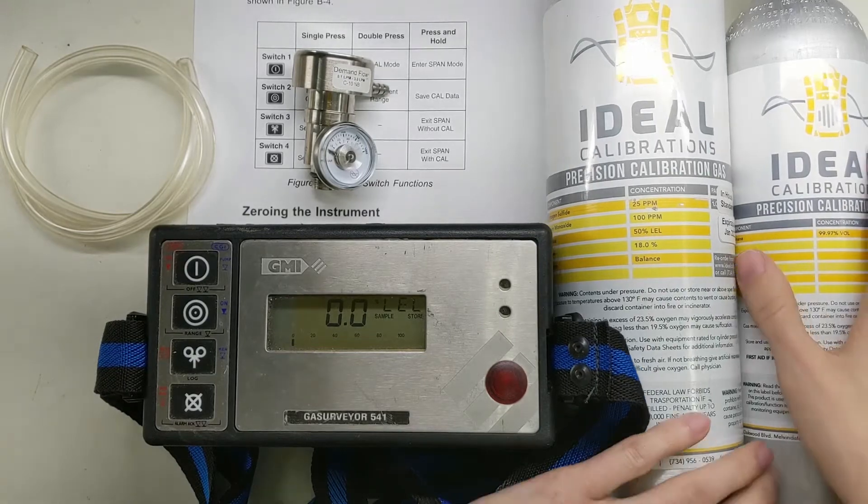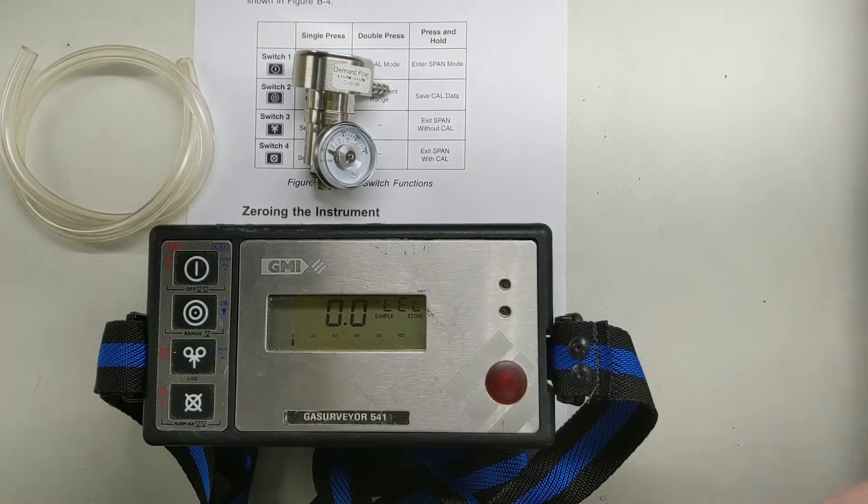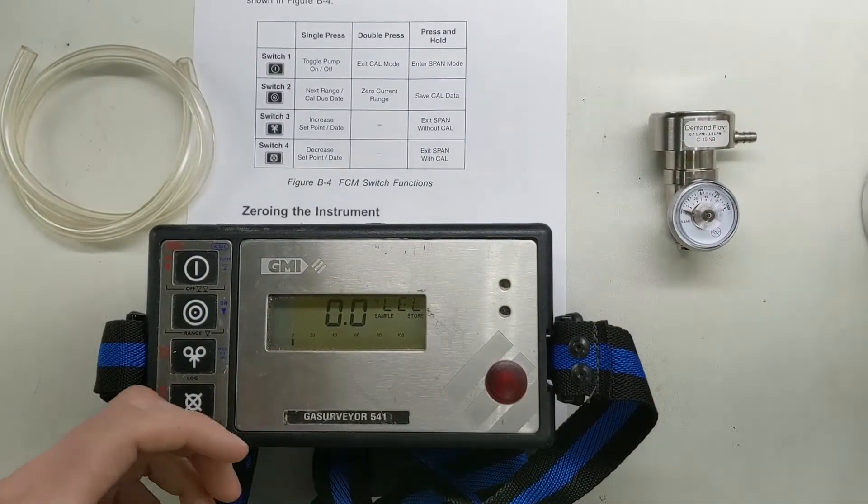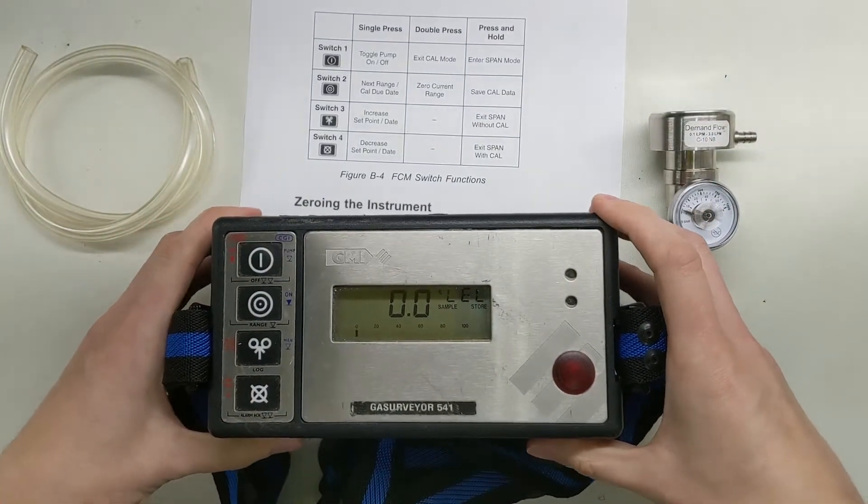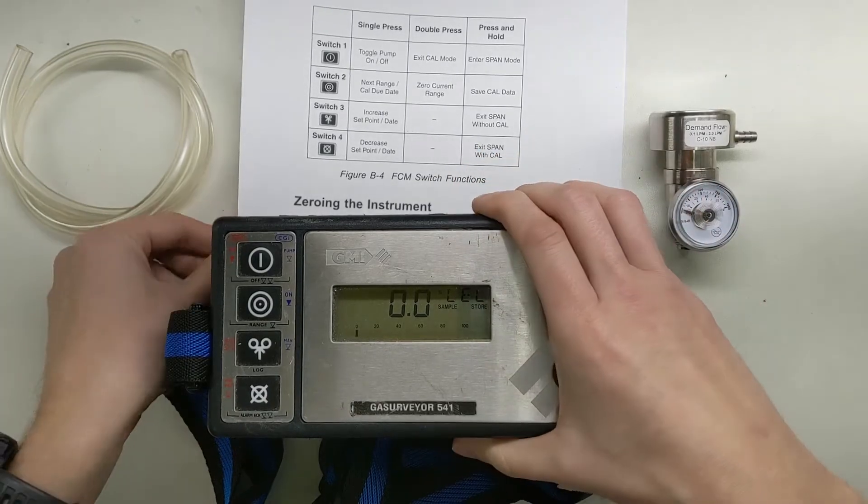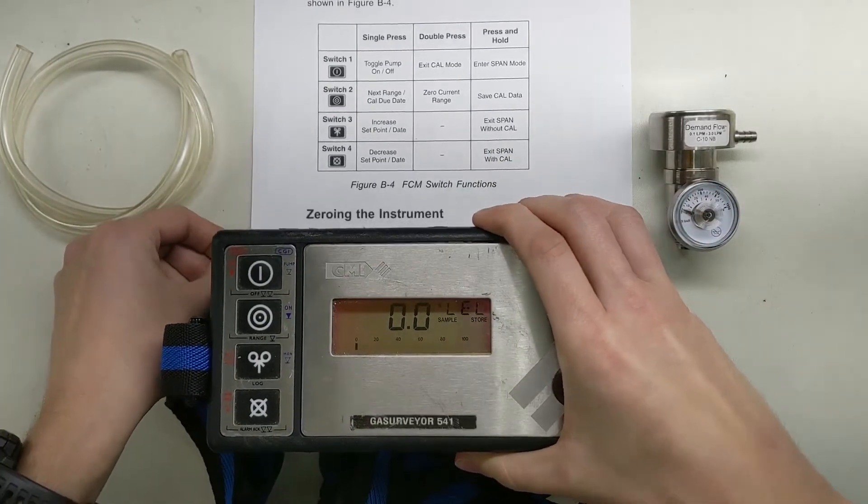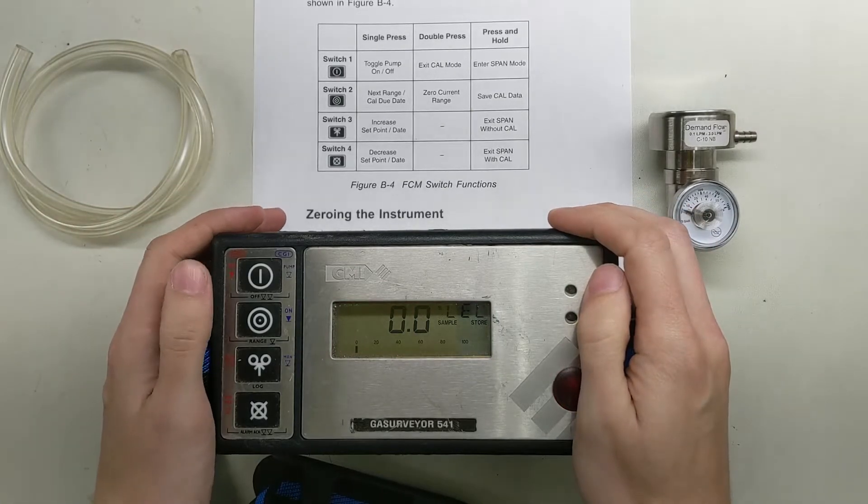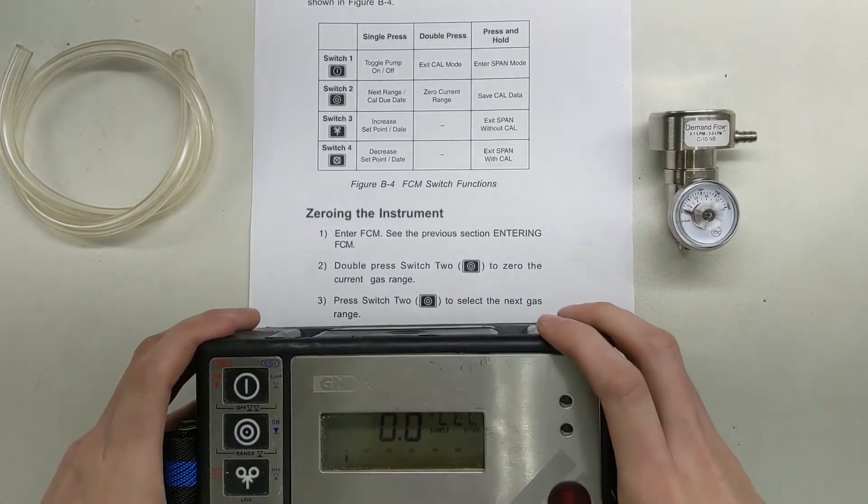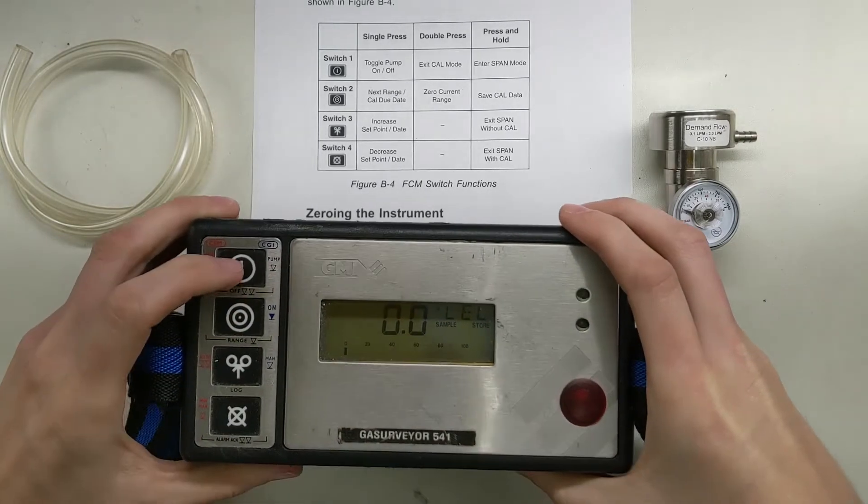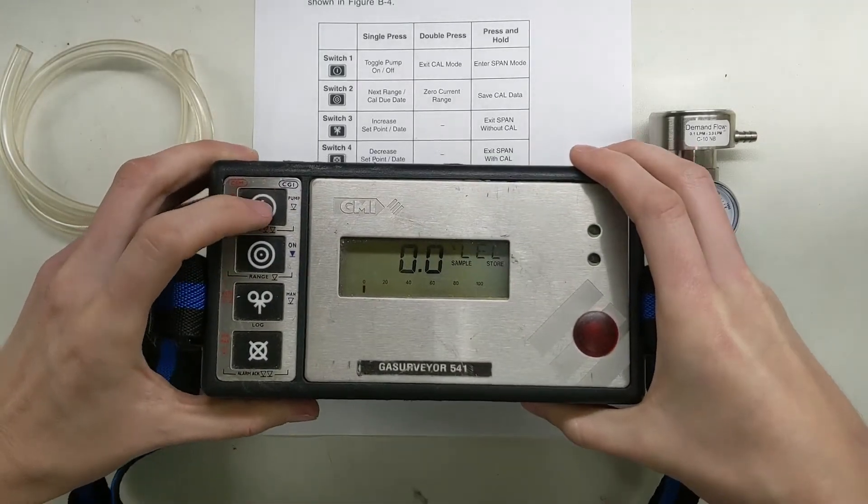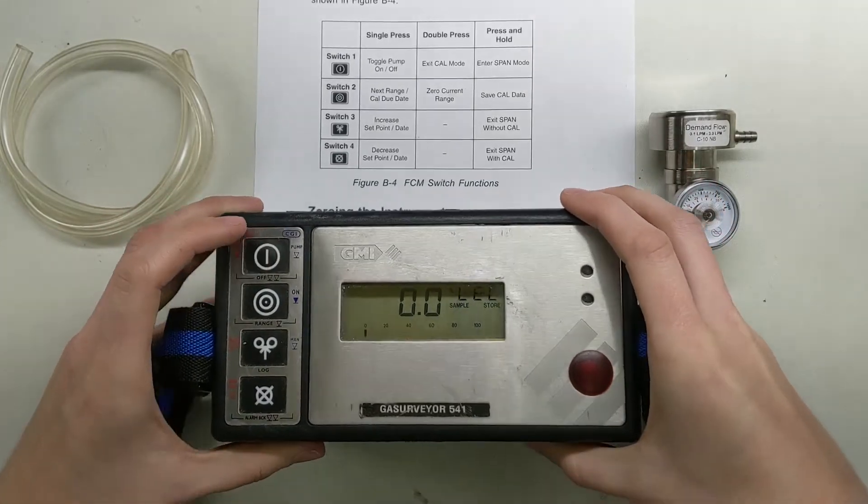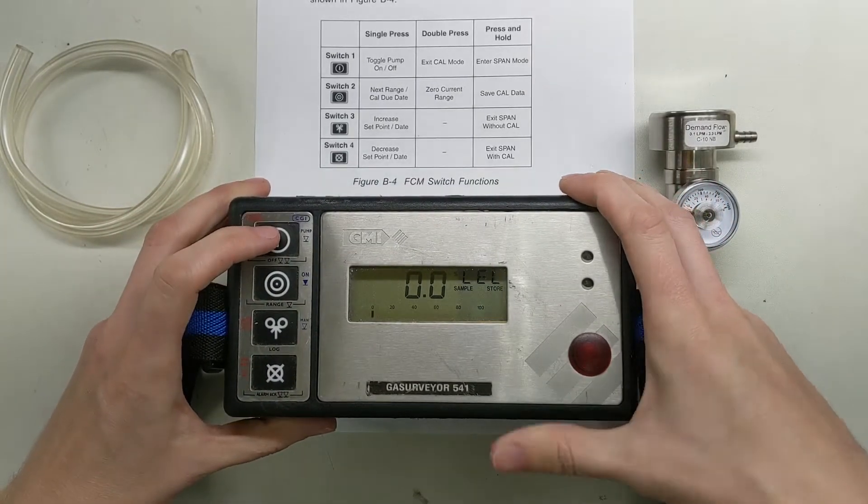The first thing we need to do is take this into the proper mode. We're going to get into the proper mode by double tapping this button here, the power button, number one. What we're going to do is double tap this and it's going to say off on the screen.